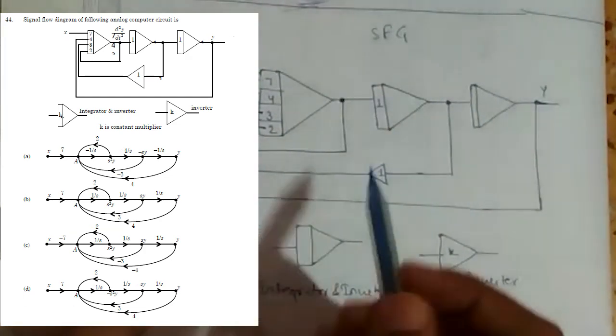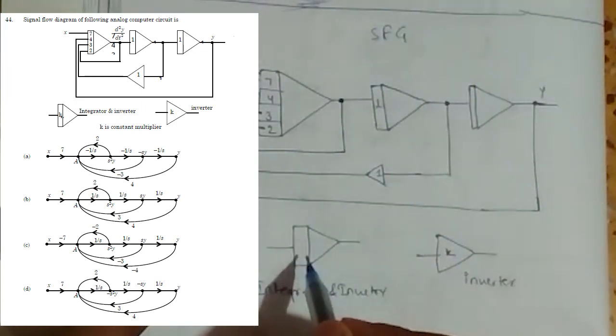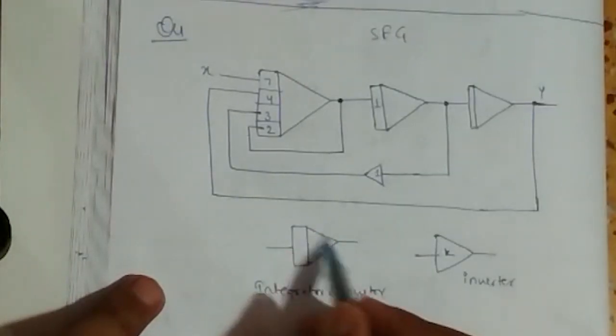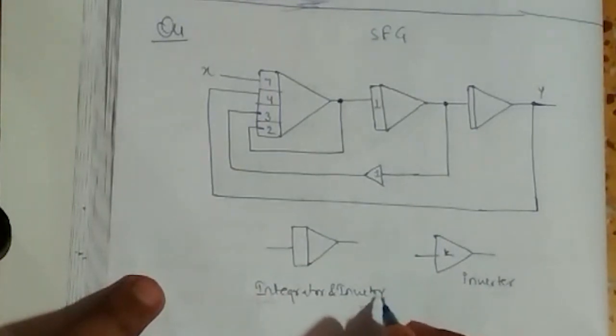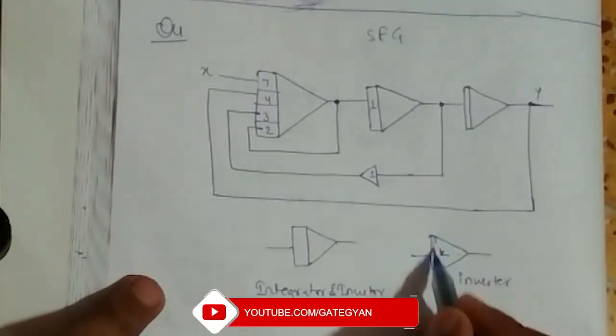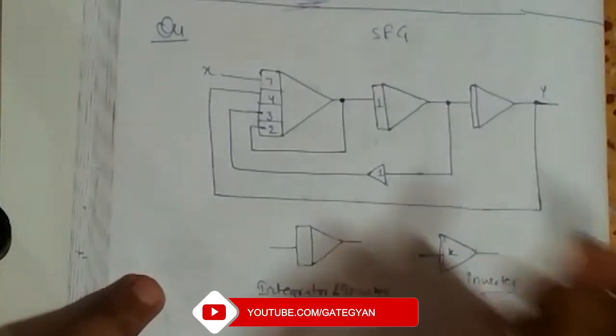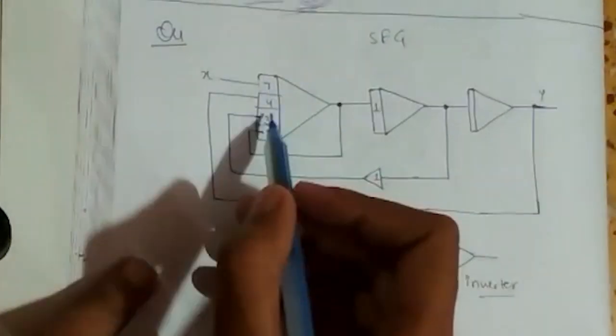The box with triangle represents integrated plus inverter circuit, and the triangle alone represents the inverter circuit. Here we are given this diagram with gains 7, 4, 3, and 2.